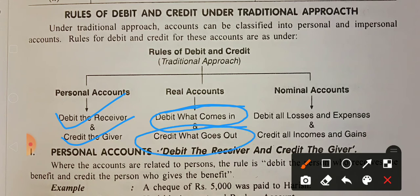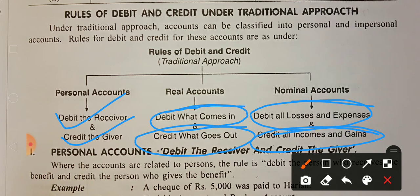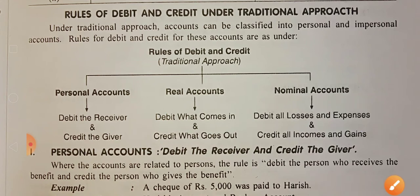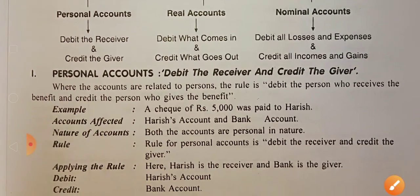The nominal account rule: expenses and losses are debited; income and gains are credited. Income and gains are related to capital accounts, which get adjusted accordingly. So credit is for income gains, and debit is for losses and expenses.